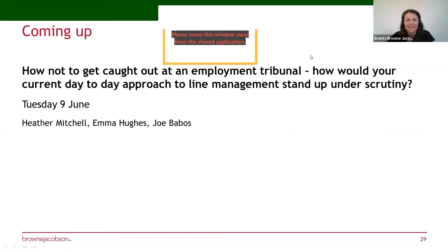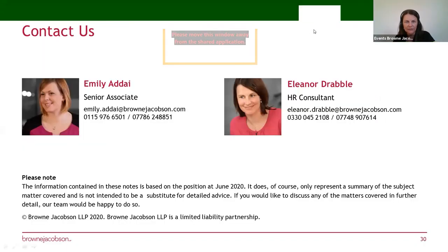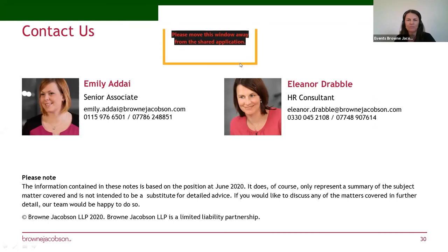That ends the session. The next session is about employment tribunals and your approach, on the 9th of June. There's time for questions. One question: should a line manager be able to view an employee's electronic grievance and disciplinary record regardless of whether they were involved in the case? There's probably a difference between grievances and disciplinary records — the line manager may know about the disciplinary record if it's relevant, for example for a redundancy exercise or a subsequent disciplinary matter with a live warning.